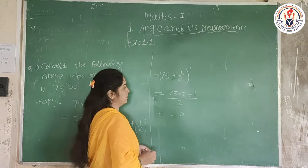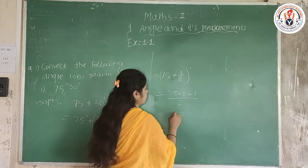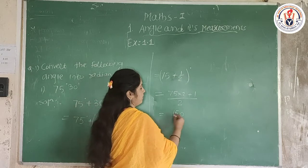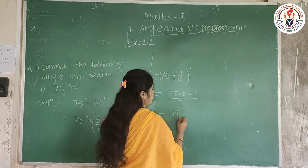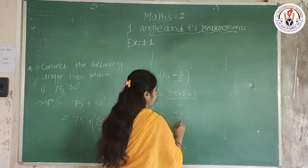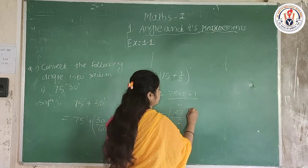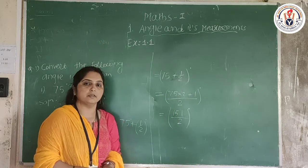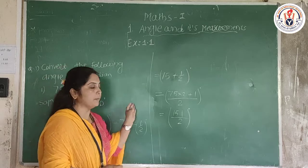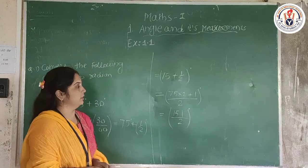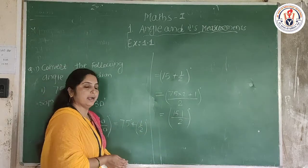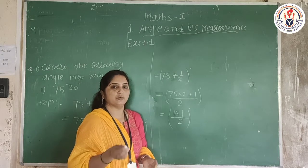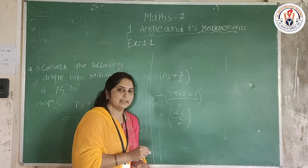That is 151/2 degrees. Now we can write the radian measure. As we know, to convert a degree measure into a radian measure, we have to multiply it by π/180.